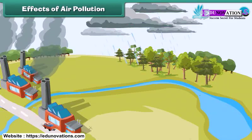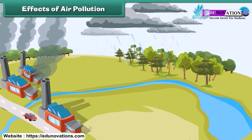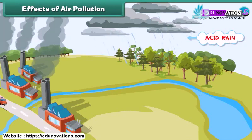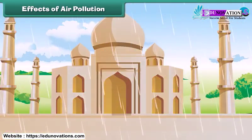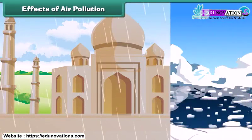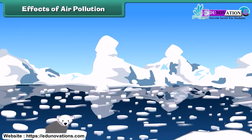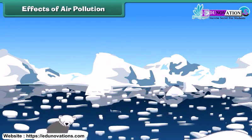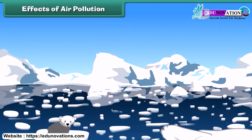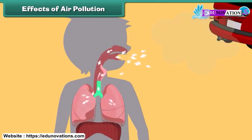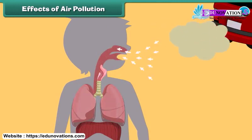This polluted air mixes with clouds in the atmosphere and brings harmful rain, also known as acid rain. Acid rain damages our buildings and monuments. Besides this, large amounts of carbon dioxide in the air increase global temperatures, which results in the melting of glaciers. It also adversely affects our lungs, and we suffer from respiratory disorders.